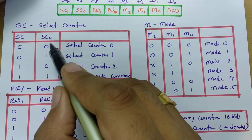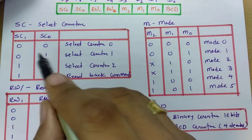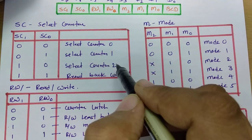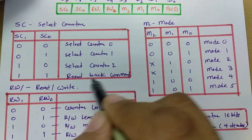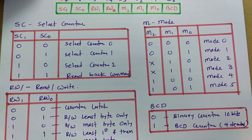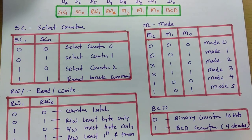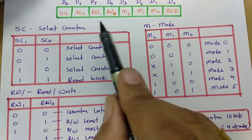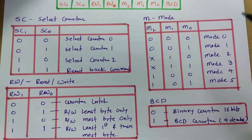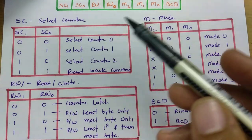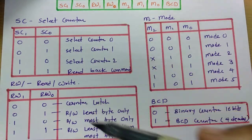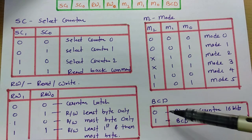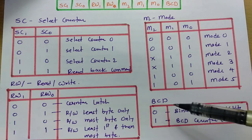The SC0 and SC1 bits select the counter: 00 selects Counter 0, 01 selects Counter 1, 10 selects Counter 2, and 11 issues a read-back command. So these 8 bits of the control register select the mode, select the counter, define read/write operation, and determine whether the counter is BCD or binary.